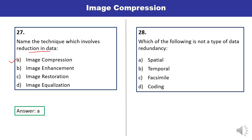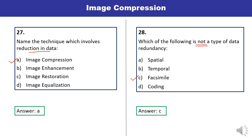Question 28: Which of the following is not a type of data redundancy? Spatial is a type, temporal is a type, and coding is a type of data redundancy. It means C is that option which is not a type of redundancy. This is correct.